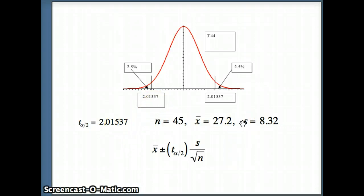So we've got all the numbers we need, t alpha by 2, x bar, s, and n. We'll plug them into that formula to go ahead and get our confidence interval.